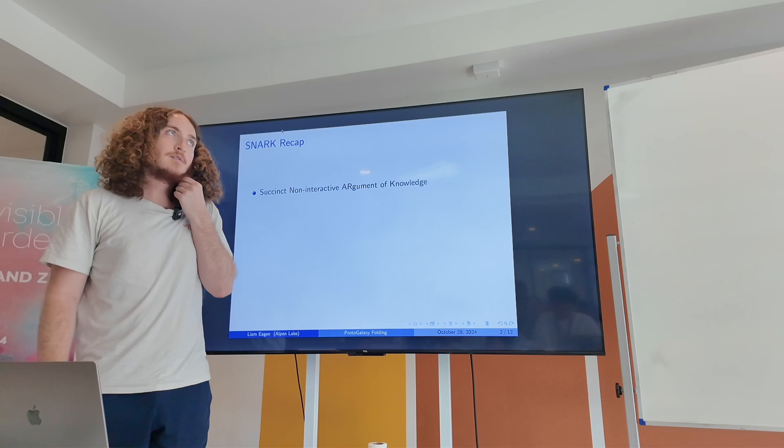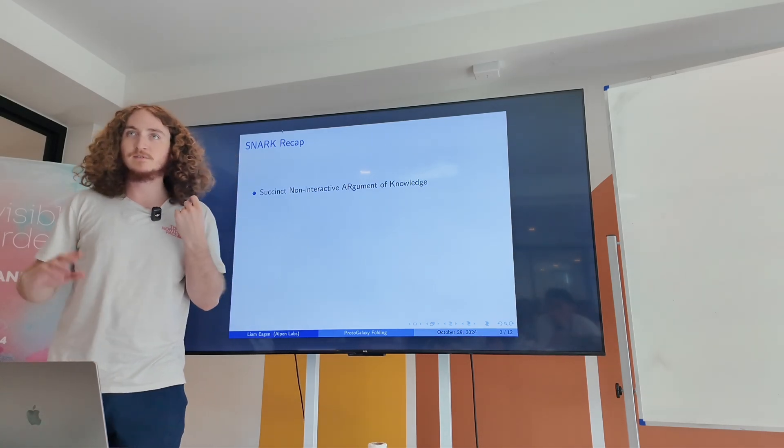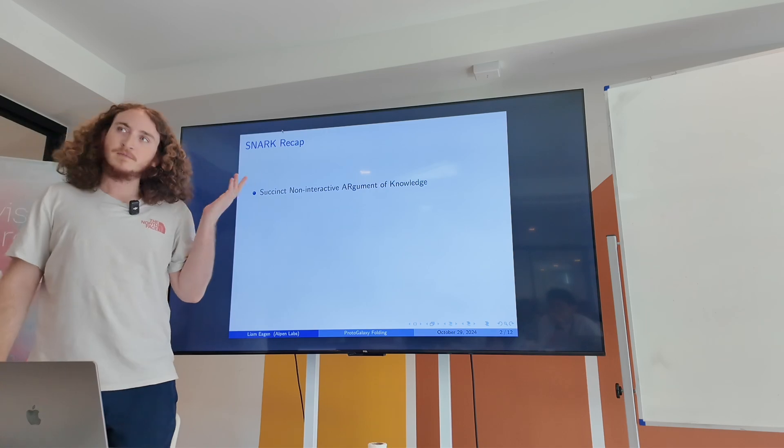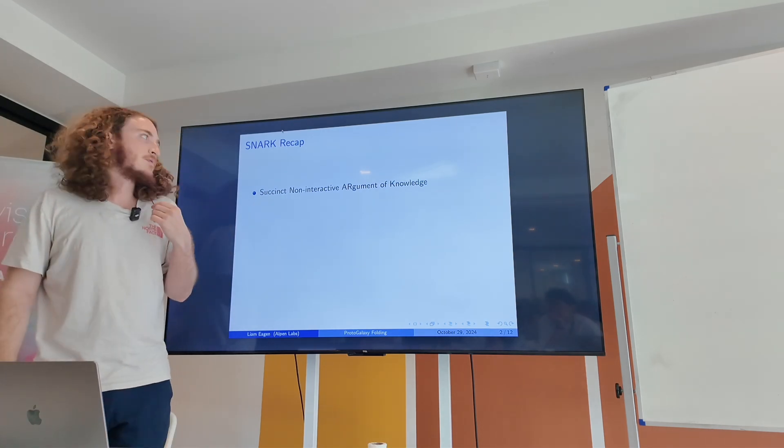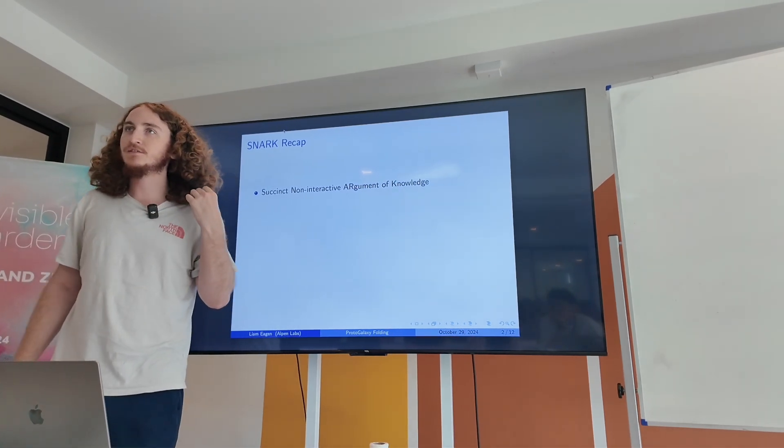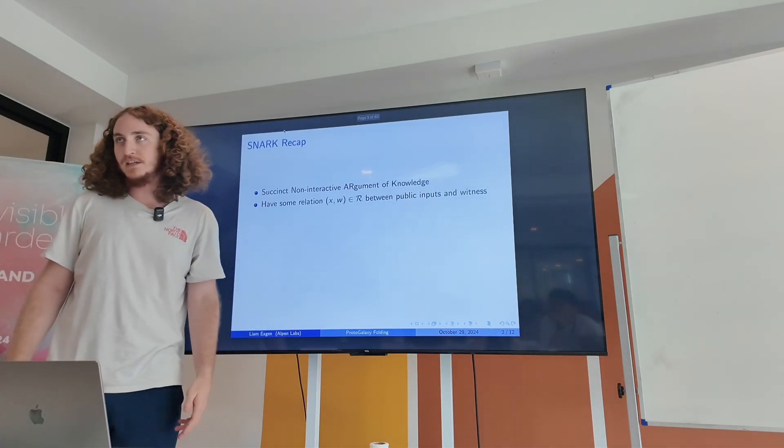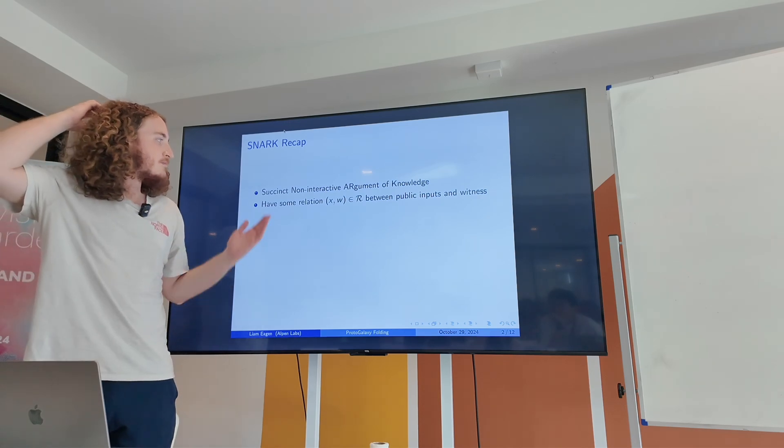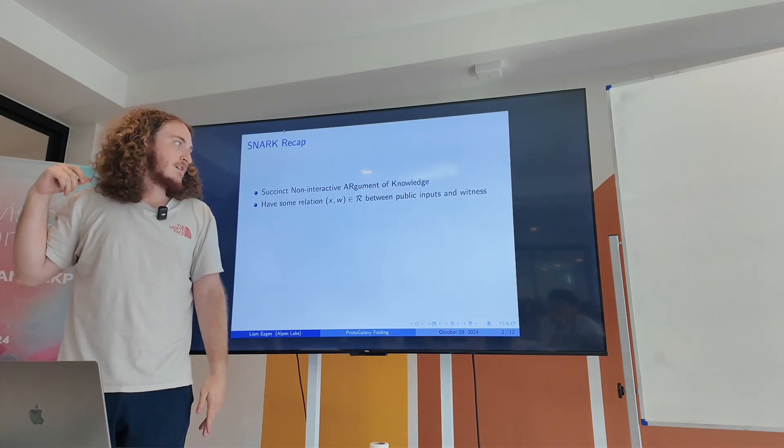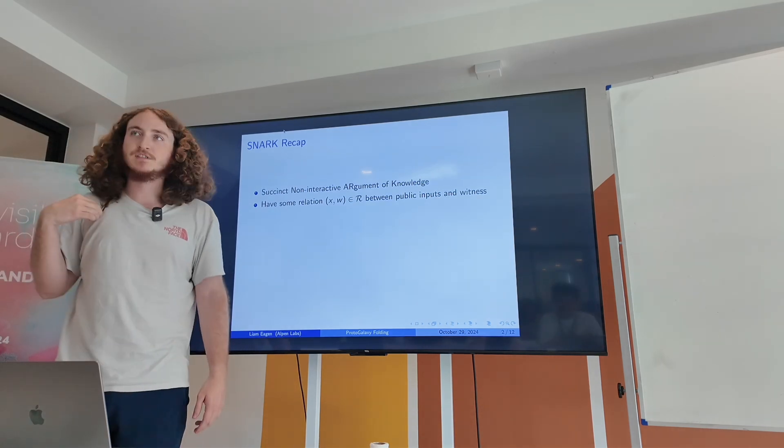I want to motivate the discussion a little bit of folding schemes in case people aren't familiar or have just sort of heard of them because they've been kind of in the air. So hopefully everybody's heard of SNARKs. People call them zero-knowledge proofs. But a SNARK is a succinct, non-interactive argument of knowledge.